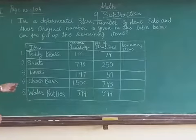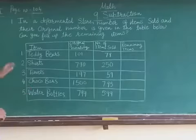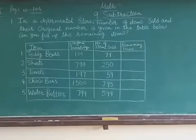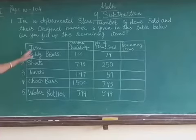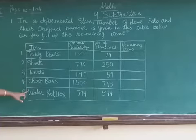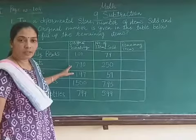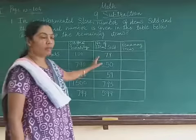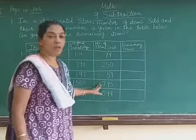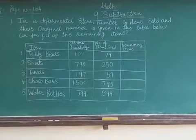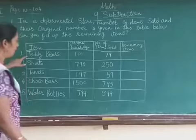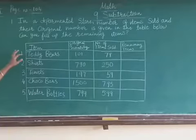Students, I take here one question. In a departmental store, a number of items sold and their original number is given in the table below. Here the departmental store list is given, the number of items are given, the original quantity for each item, and how many number of items sold. We have to find out the remaining items. First of all, we take each item one by one so we can find the remaining items.